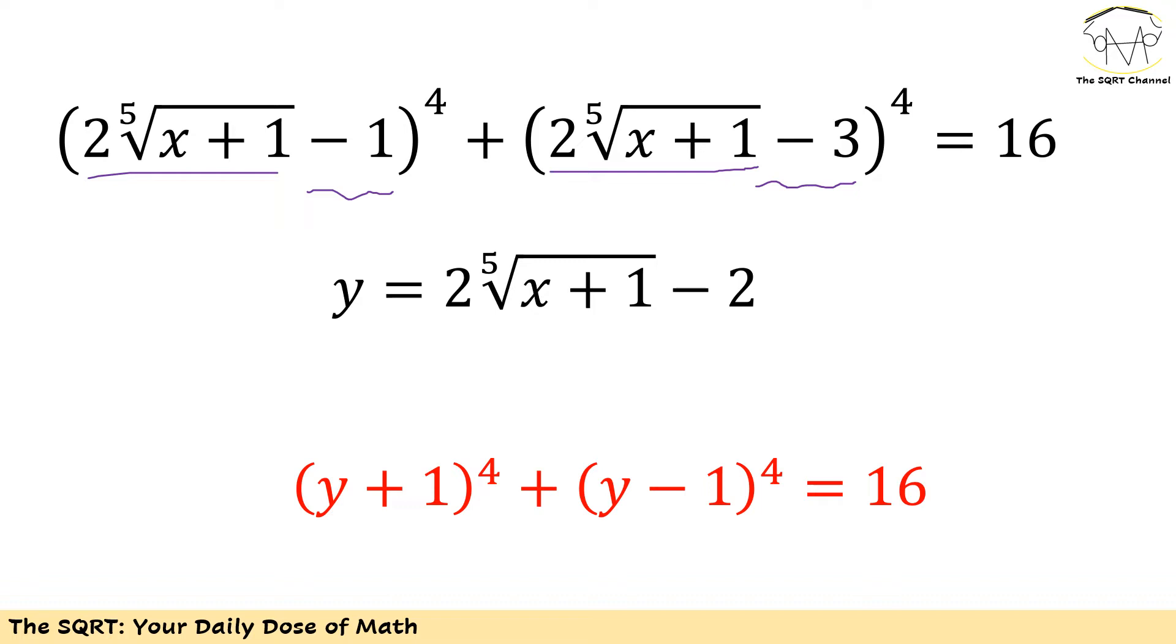To do that, I'm going to start with a new variable like y. I defined it as two times the fifth root of x plus 1 minus 2. Based on that, the first term is going to be y plus 1 to the power of 4, and the second term is going to be y minus 1 to the power of 4. The rest is going to be the same.